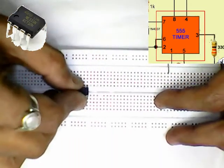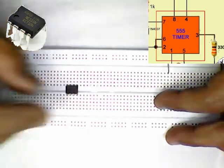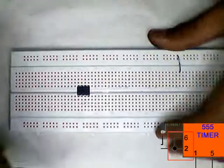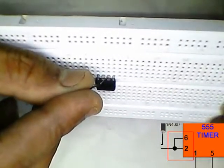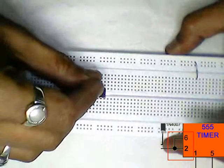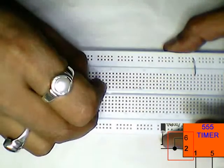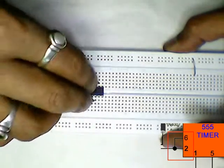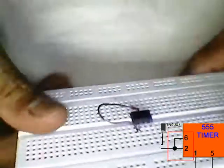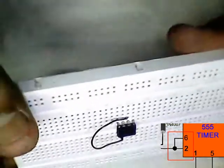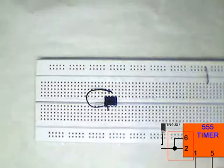Connecting 555 timer IC. Connecting pin 6 and pin 2 of the timer IC. Connecting pin 4 and pin 8 of the timer IC.